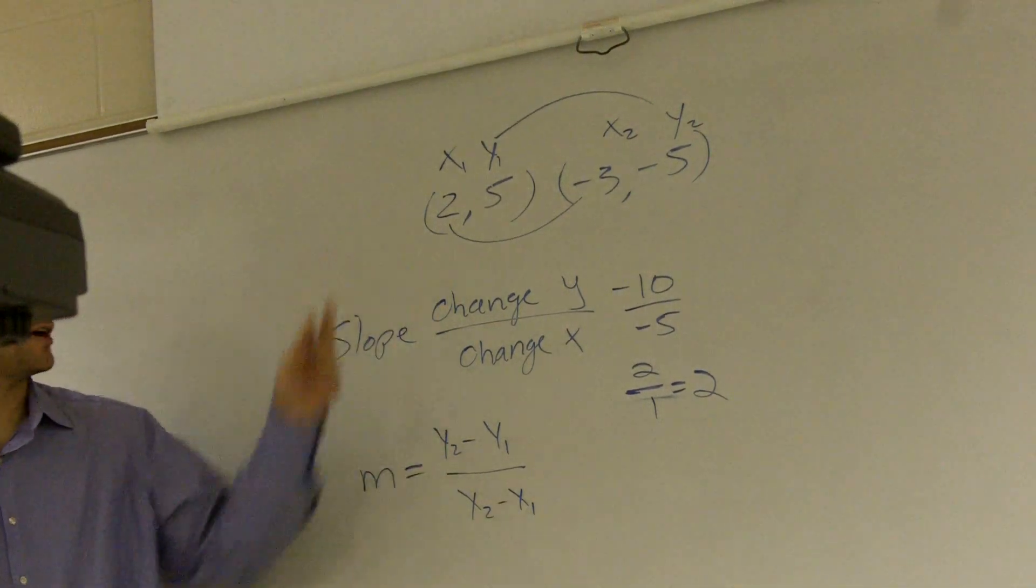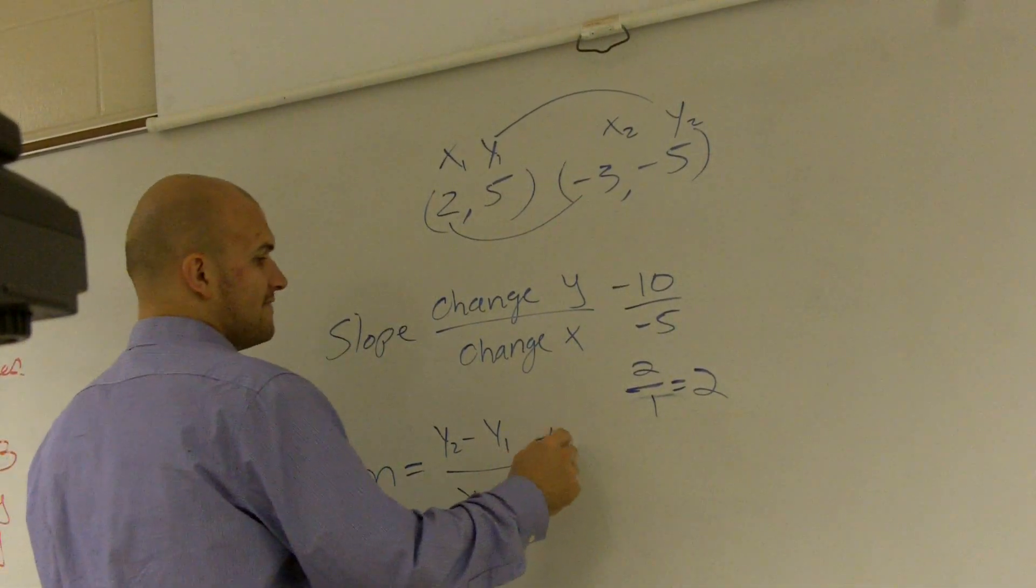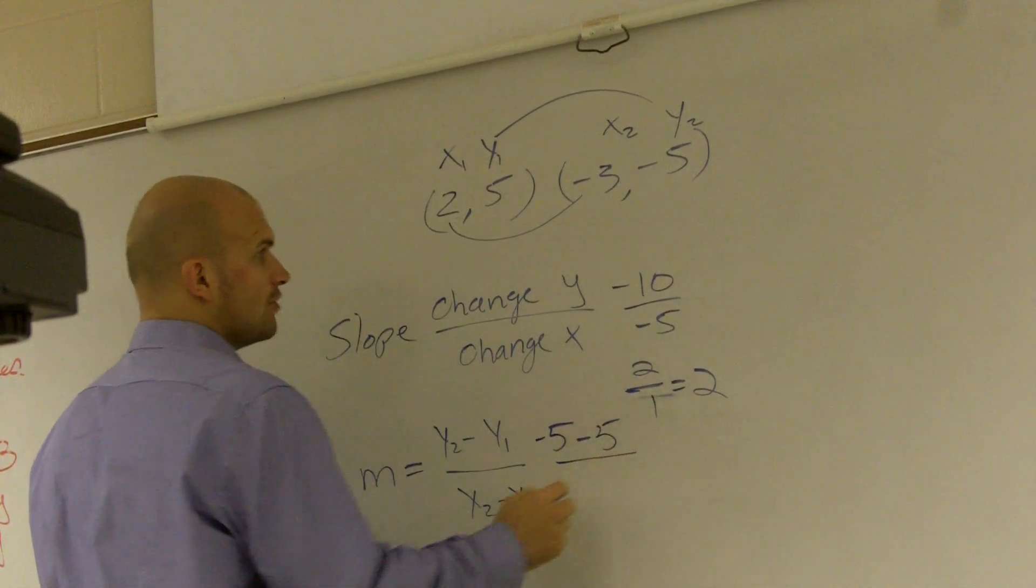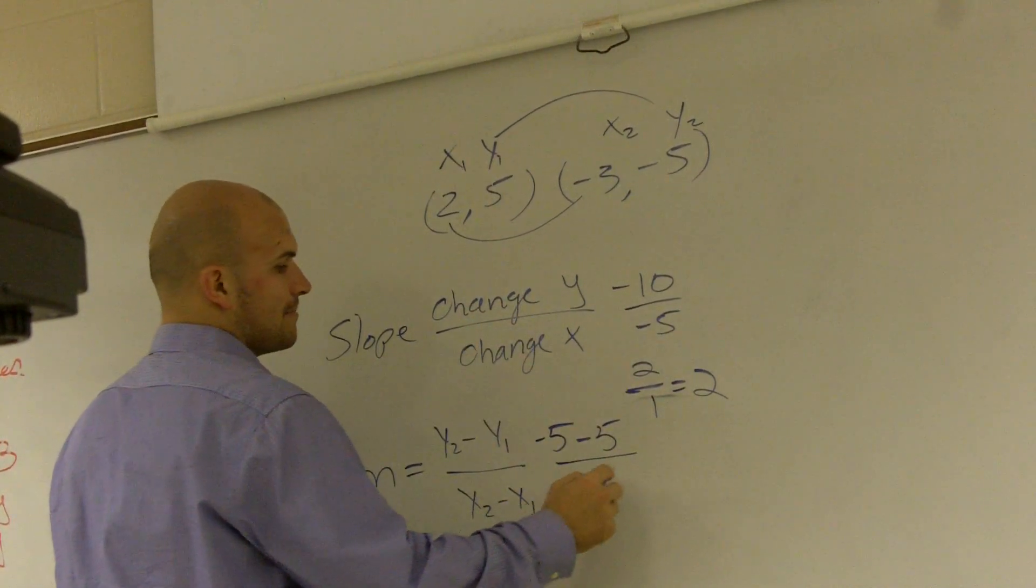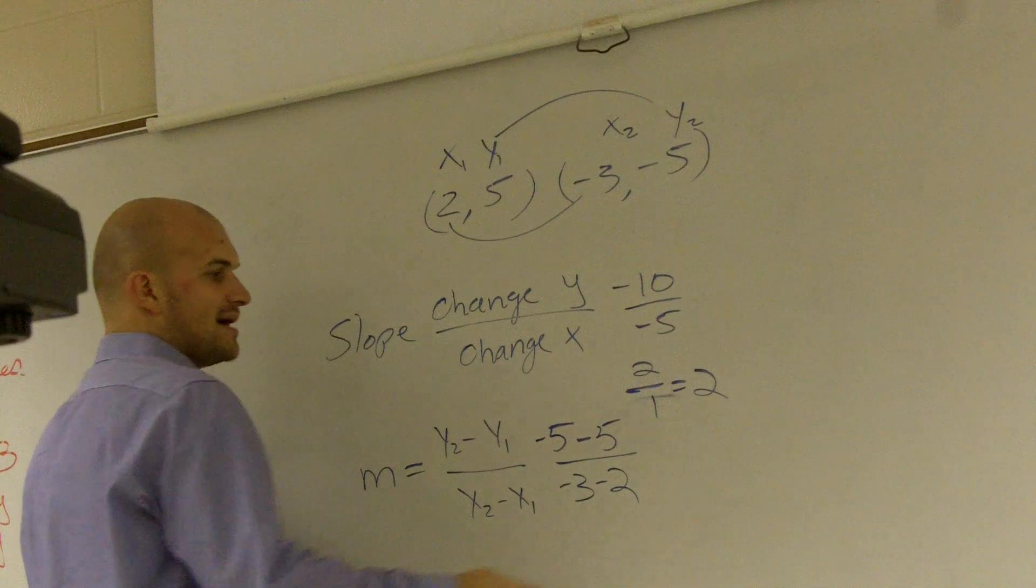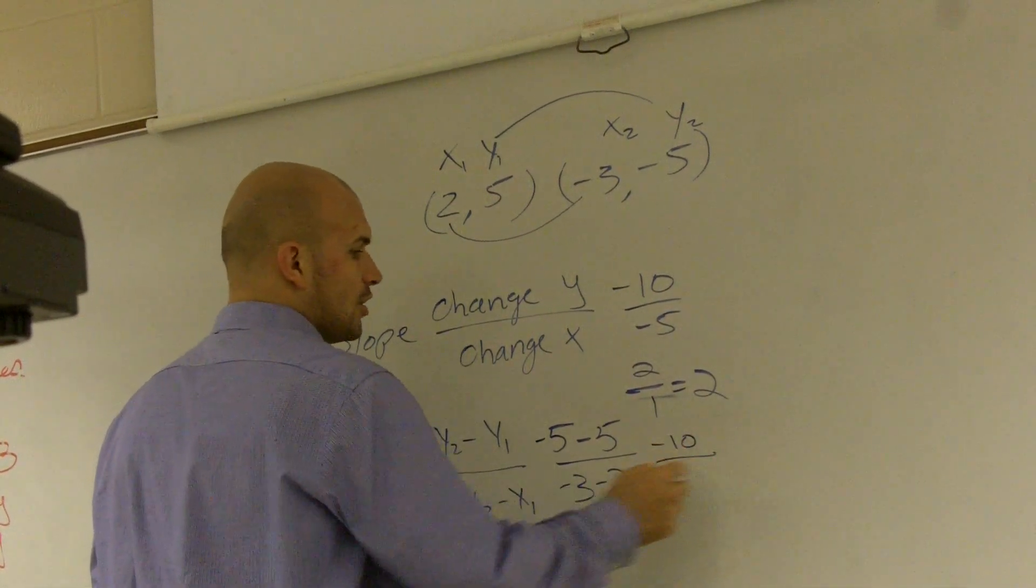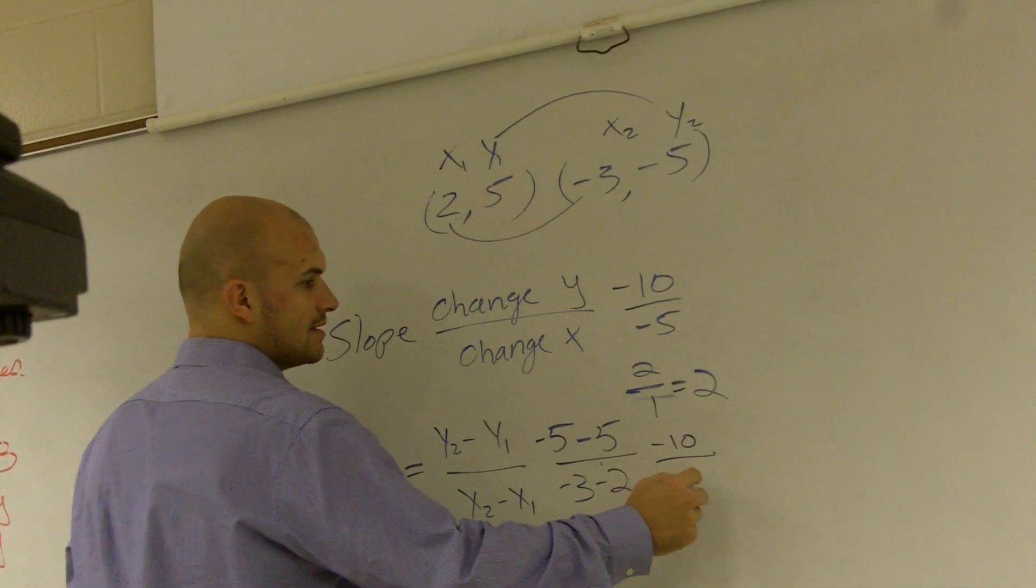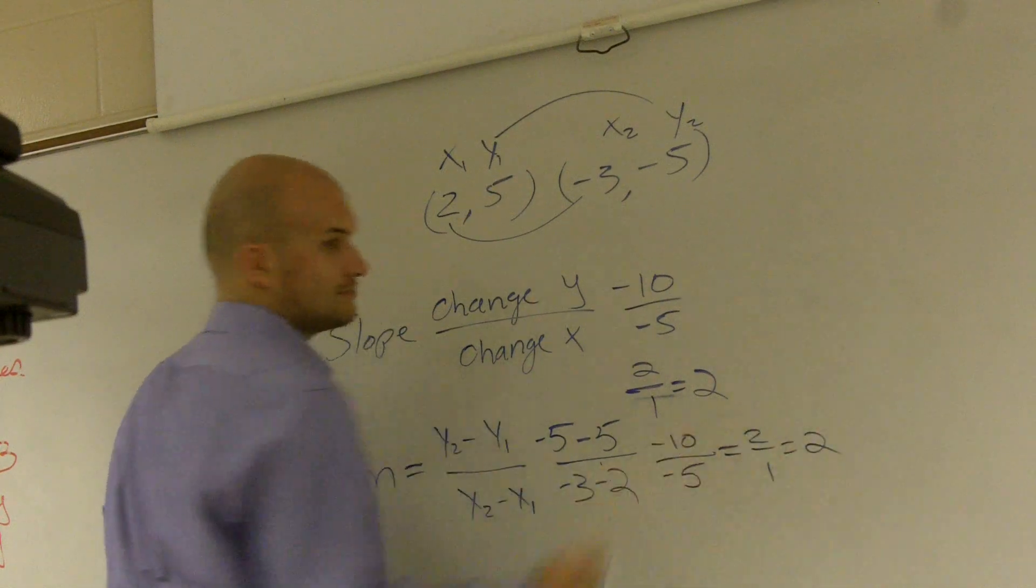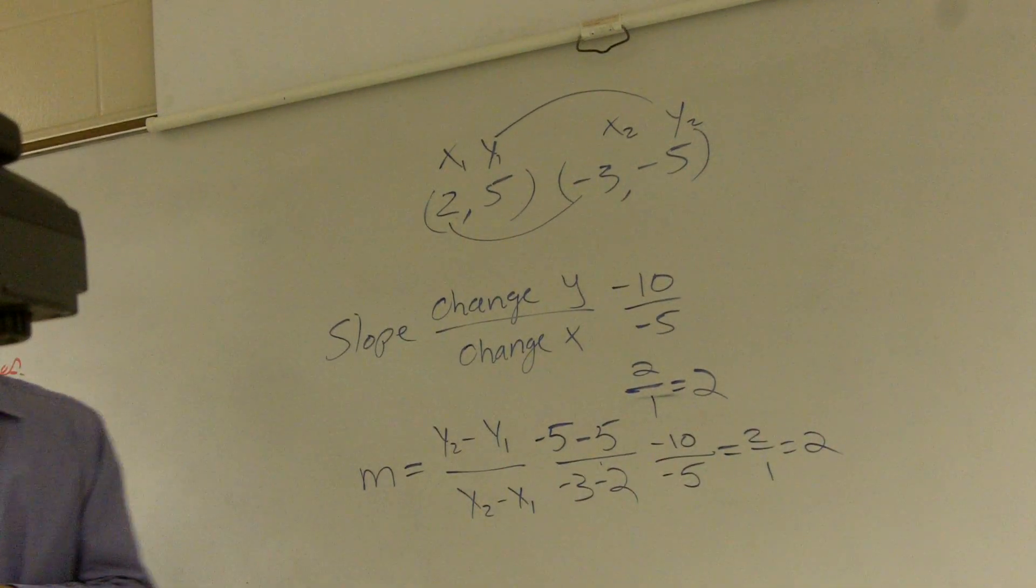So you're going to subtract your two variables. So you could say negative 5 minus 5 all over negative 3 minus 2. Well, negative 5 minus 5 is negative 10 over negative 3 minus 2 is negative 5.